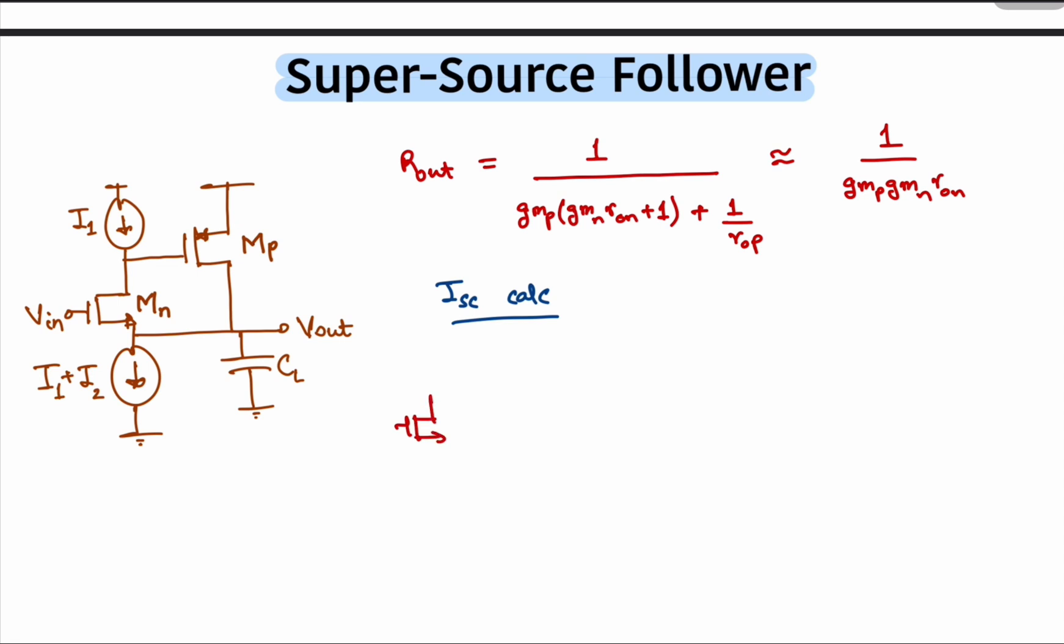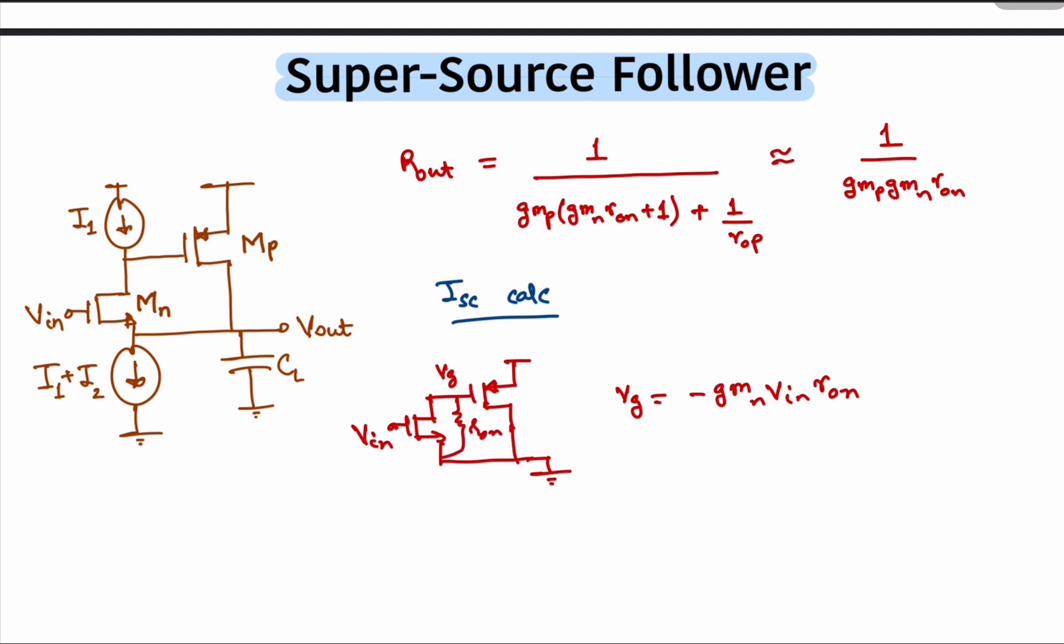Now let's look at the short circuit current to compute the gain. Proceeding like before but shorting the output instead of Vn this time. As before, the gmVn current is forced to flow through Rn, which develops a negative voltage at the gate of Mp equal to minus gmVn times Vn times Rn. That forces Mp to provide the short circuit current of Gmp times Vg in magnitude.